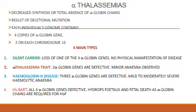In HbBart, fetal death occurs and it is also known as hydrops fetalis, as all four alpha globin chains are defective. The alpha globin chains are required for the synthesis of hemoglobin F.